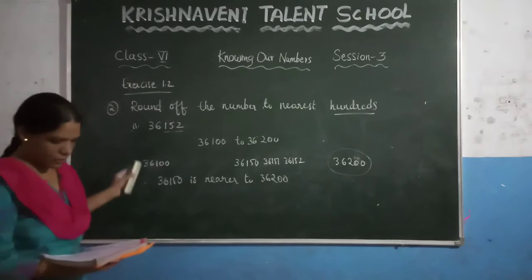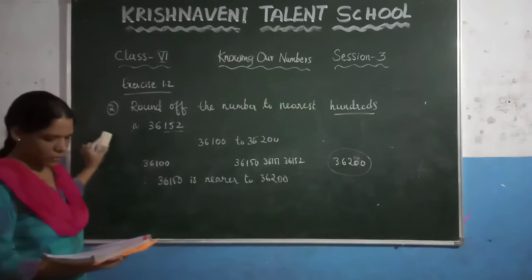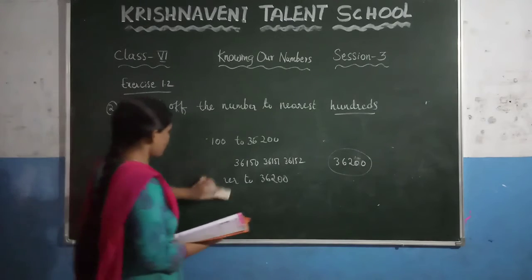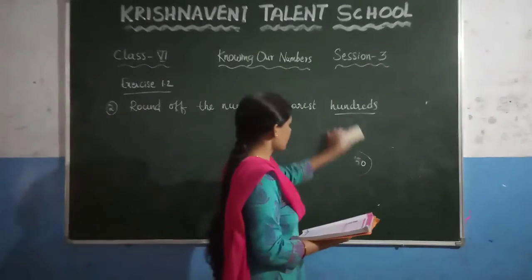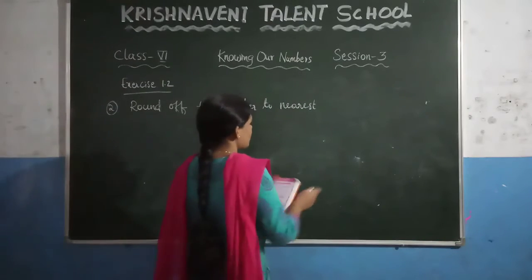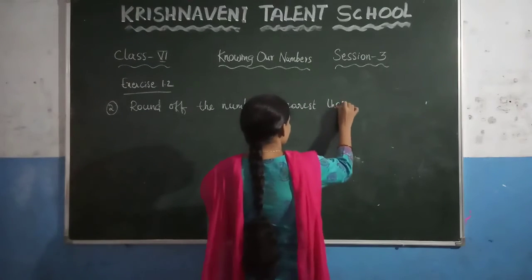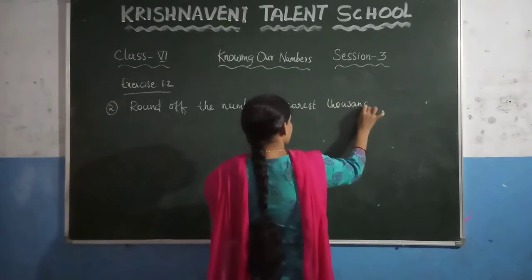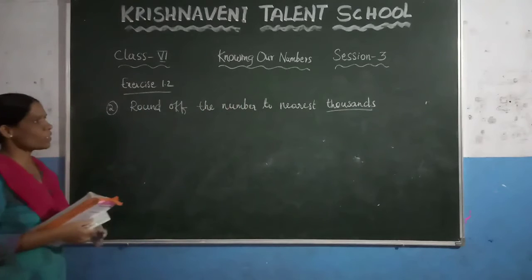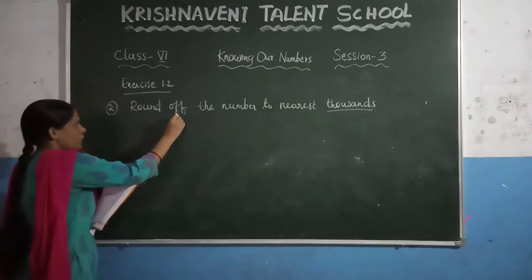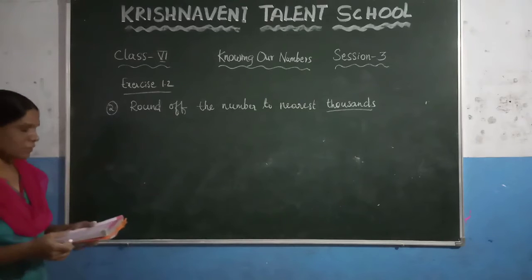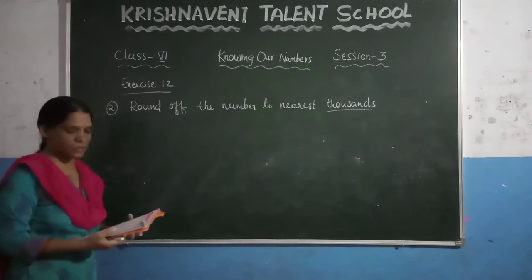Two questions are there as your homework. Now see the third question — they ask to write to the nearest thousands. The first question asked rounding to the nearest tens, the next hundreds, and now they ask rounding to the nearest thousands.